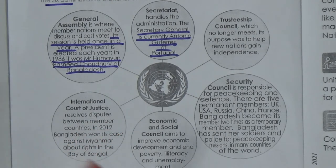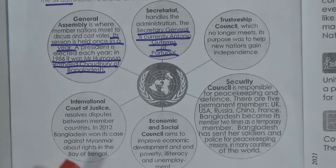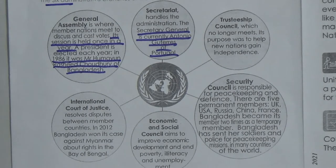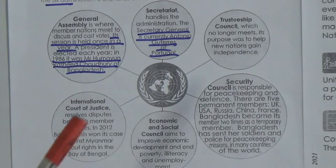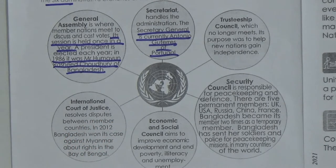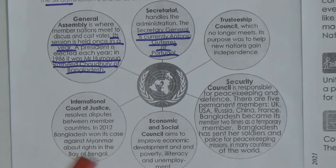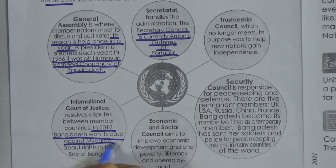The International Court of Justice resolves disputes between member countries. If any problem arises between countries, those countries go to the International Court of Justice to demand justice. Just like individuals go to a court for legal assistance, countries go to the International Court of Justice to solve disputes. In 2012, Bangladesh won its case against Myanmar about rights in the Bay of Bengal.